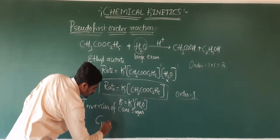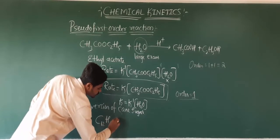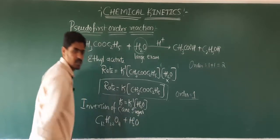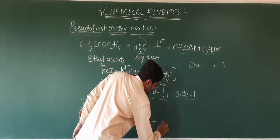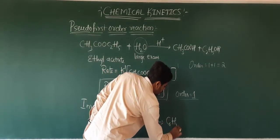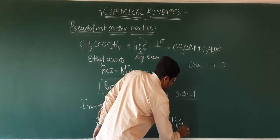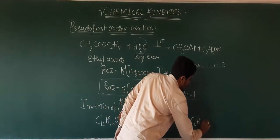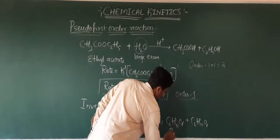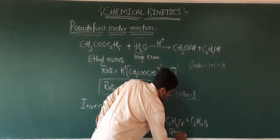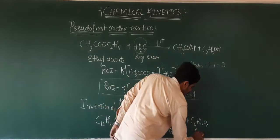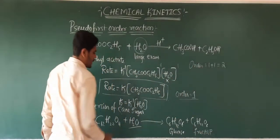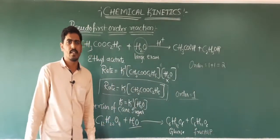Cane sugar is nothing but sucrose, with formula C12H22O11. Upon hydrolysis, it gives C6H12O6 plus C6H12O6 — that is, glucose and fructose. In this reaction also, we take water in large excess.